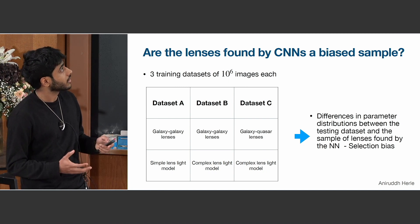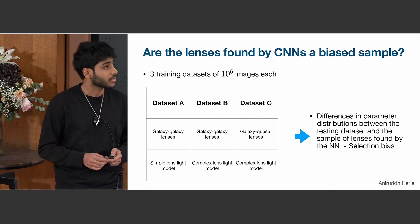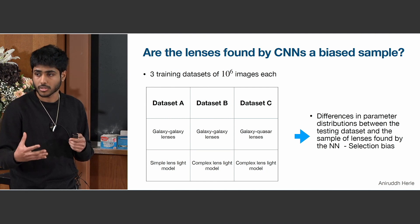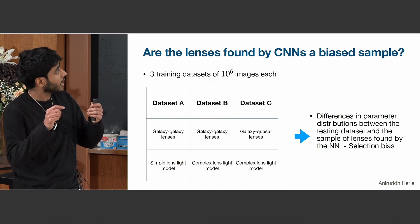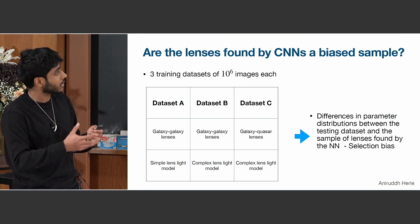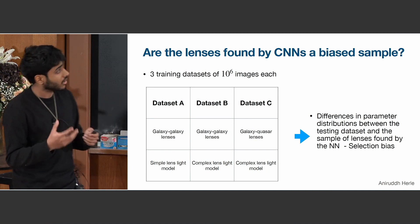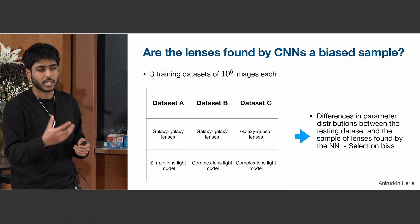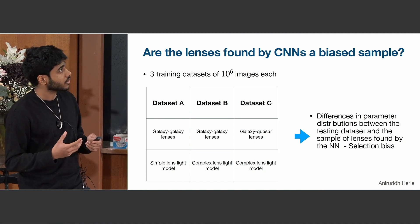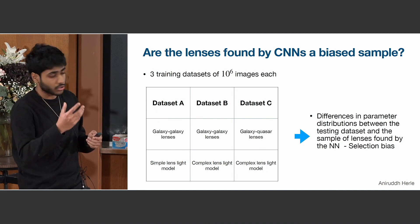What we did was make three training datasets with a million images each, split evenly between lenses and non-lenses. The first dataset is the simplest formulation, where you have an extended source so you get arcs, and the lens light model is a simple source profile. Dataset B is basically the same but the lens light model is more complex and realistic — it has spiral arms and star formation regions, things that can confuse the neural network and make the problem harder. The last dataset has a complex lens light model and a point source, so you get galaxy-quasar lensing.